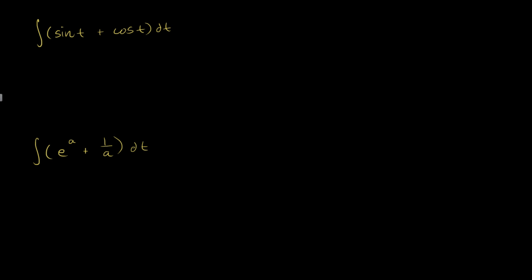I thought I would do a few more examples of taking antiderivatives, just so we feel comfortable taking antiderivatives of all of the basic functions that we know how to take the derivatives of. I just want to make it clear that it doesn't always have to be functions of x. Here we have a function of t, and we're taking the antiderivative with respect to t. You would not write a dx here — that is not the notation. You'll see why when we focus on definite integrals.